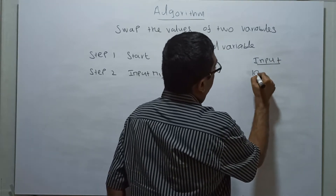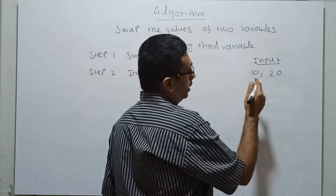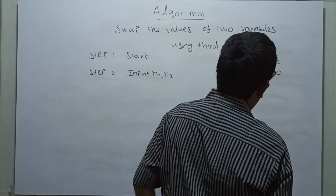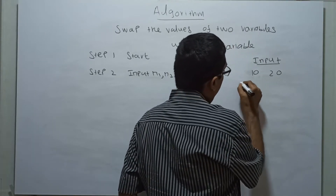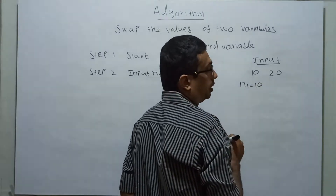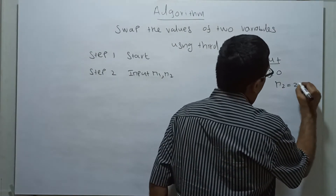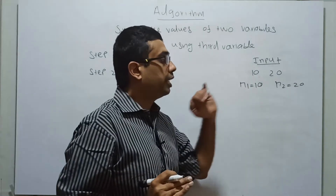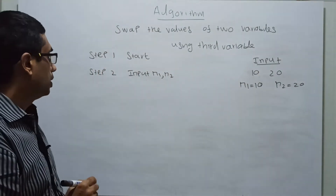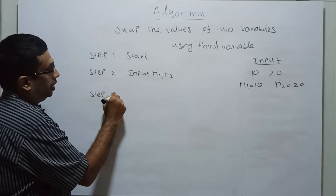I am entering the values 10 and 20. So n1 is assigned the value 10, and n2 is assigned the value 20. That is my input. Next, step 3.